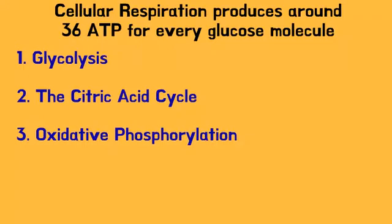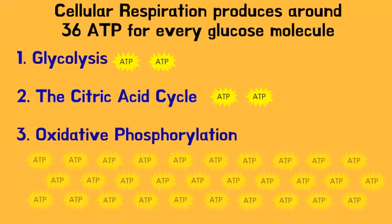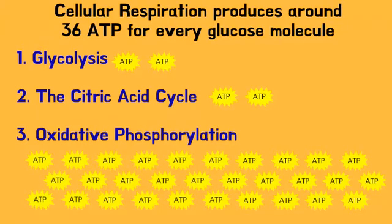The process of cellular respiration produces approximately 36 ATP per glucose. Glycolysis produces 2 ATP. The citric acid cycle produces 2 ATP. And oxidative phosphorylation produces approximately 32 ATP.